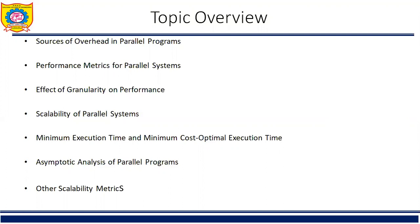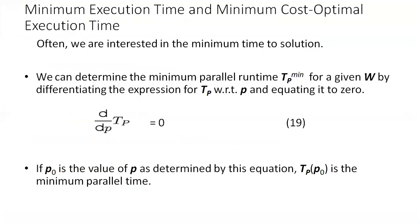We can determine the minimum parallel runtime tp_min for a given w by differentiating the expression for tp with respect to p, where w is the work size. Equating the derivative to 0, the number of processing elements for which tp is minimum is determined by the following equation.